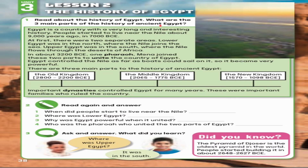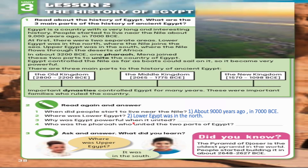Exercise 2: Read again and answer. 1. When did people start to live near the Nile? About 9,000 years ago, in 7,000 BCE. 2. Where was Lower Egypt? Lower Egypt was in the north. 3. Why was Egypt powerful when it united? Because Egypt controlled the Nile as far as boats could sail on it. 4. Who was the pharaoh who united the two parts of Egypt? It was Mina.